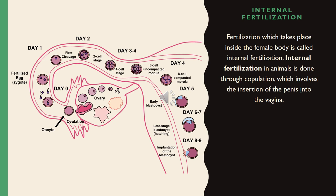Fertilization which takes place inside the female body is called internal fertilization. Internal fertilization in animals is done through copulation, which involves the insertion of the penis into the vagina.